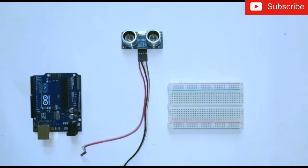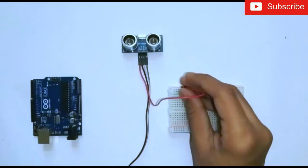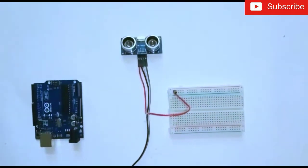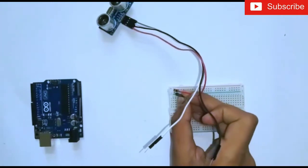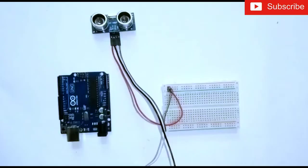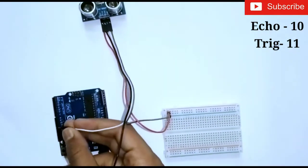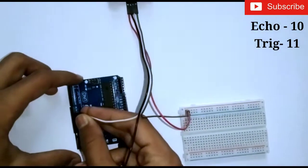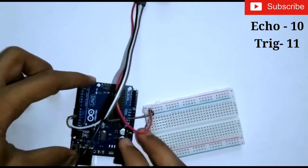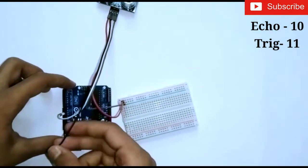Connect the VCC and the GND of the ultrasonic sensor to the breadboard. Connect the echo pin to digital pin number 10. Then connect the trigger pin to digital pin number 11.